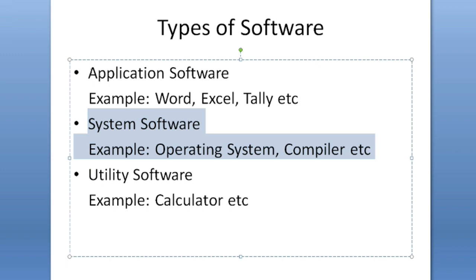Compiler, assembler, and interpreter are also system software. Whatever software connects with or helps operate your computer system is called system software.